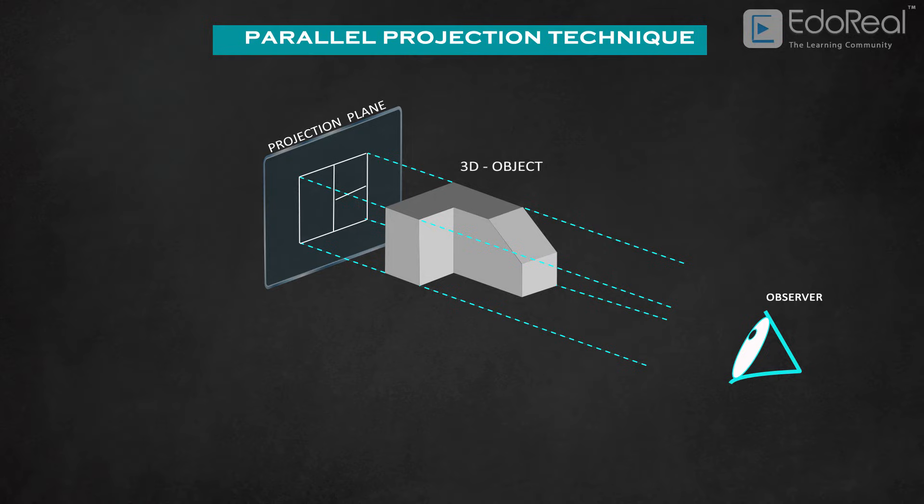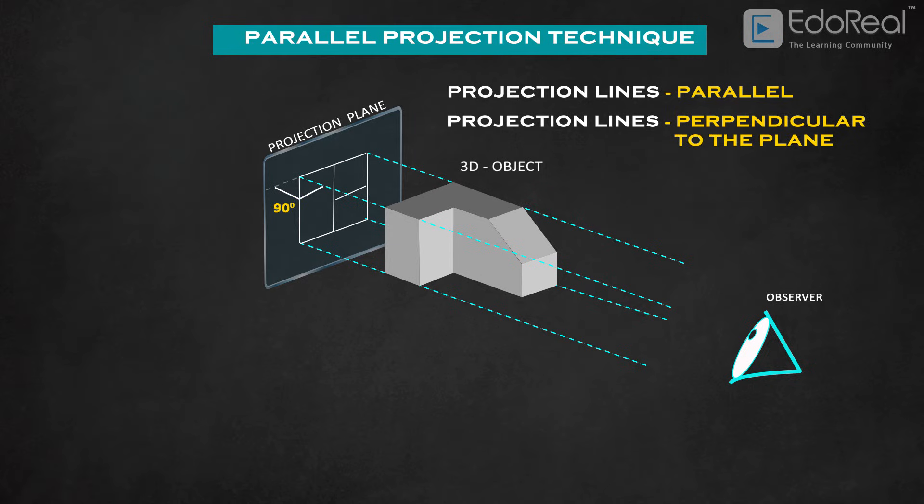Parallel projection literally means line of sight or projection lines are parallel to each other. These projection lines are projected perpendicular to the plane. So if the projection lines are parallel to each other and also perpendicular to the projection plane, it is called orthographic projection.